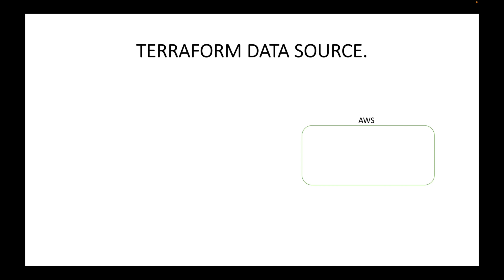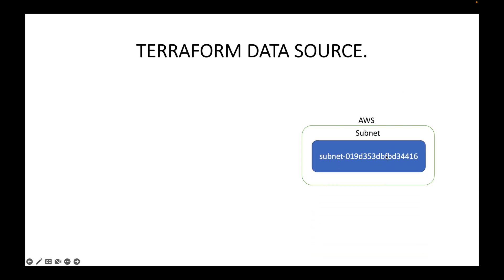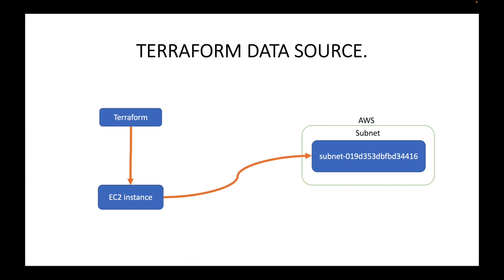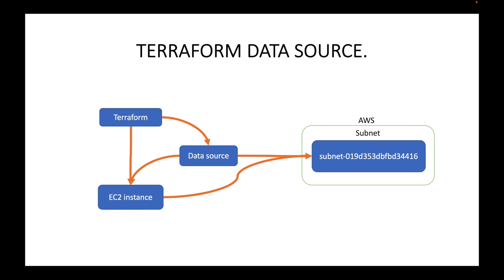Say you already have the AWS cloud platform and within it you have a subnet with a subnet ID. You want to launch an instance within this subnet — this is an existing resource available on AWS. Instead of hard-coding this information within the resource block for the EC2 instance, we can use a data source to fetch the necessary information about this subnet and provide it to the resource block for the EC2 instance, which will then launch the instance within that subnet. Any existing information you want to fetch can be retrieved using the Terraform data source block.